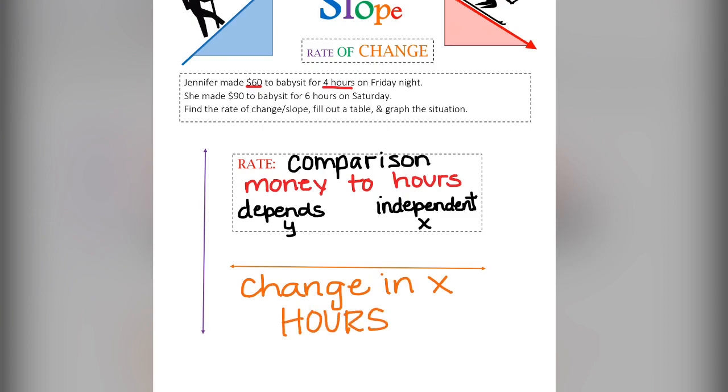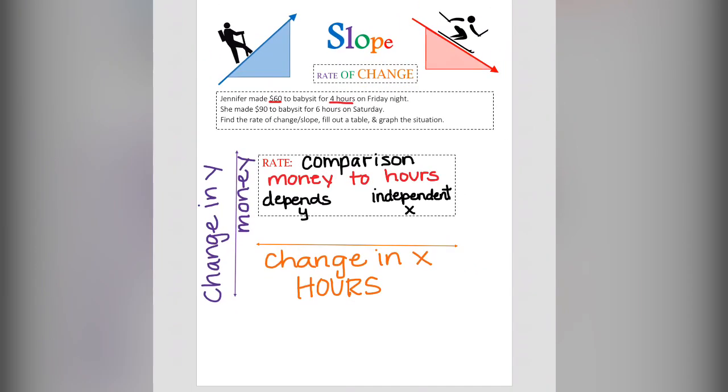So now when you think about the change along the x-axis, we will call that the change in x, or the hours she worked. The change along the y-axis is represented by the amount of money she makes. Hours are independent, and the money is dependent.